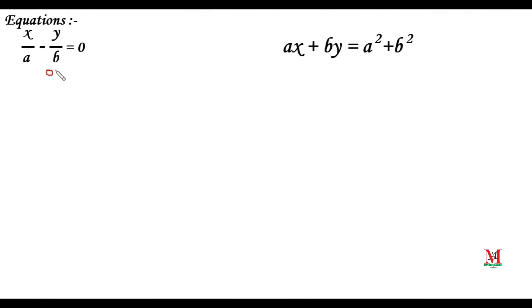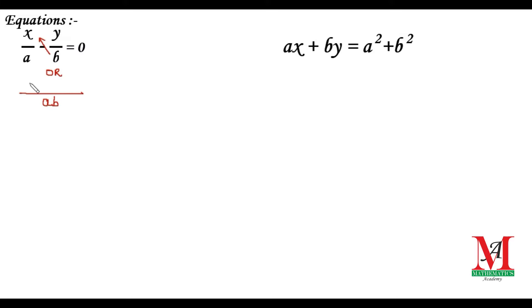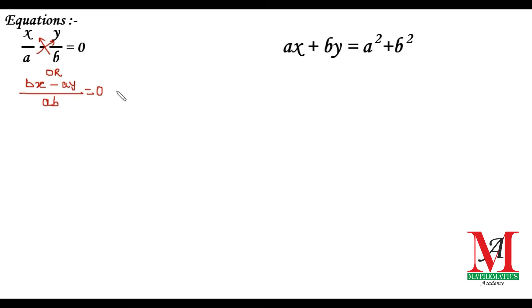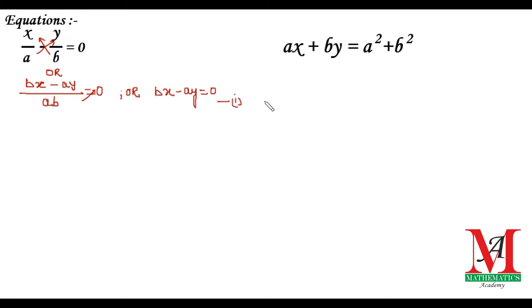Again we have a question in which the coefficients are a and b. In the first equation we see that the sum coefficients are in the denominator, so simplifying it by taking the LCM, as you see on the screen. Finally, after simplification and multiplication, we get bx minus ay equals zero. This will be the first equation, and we label a second equation accordingly.